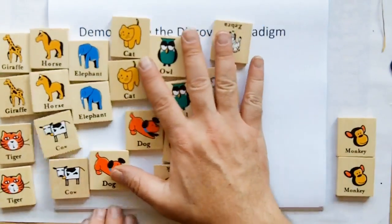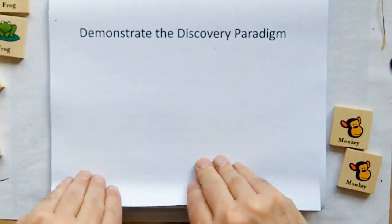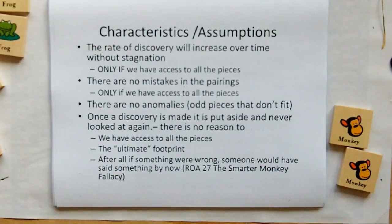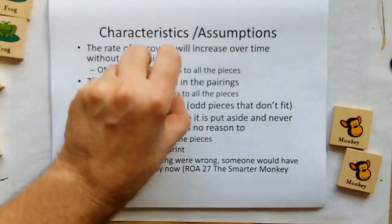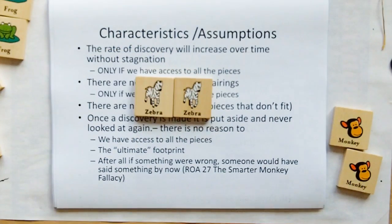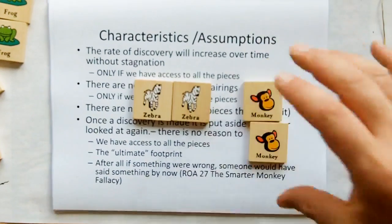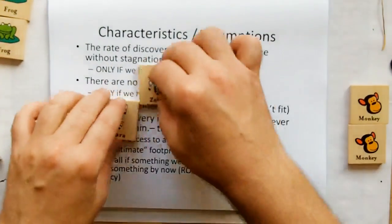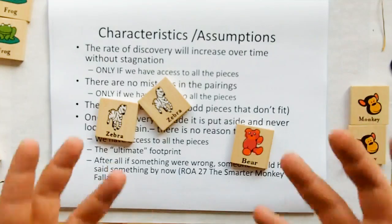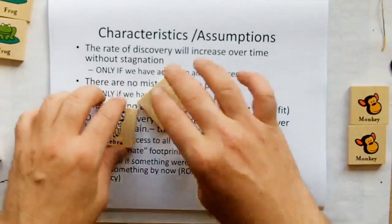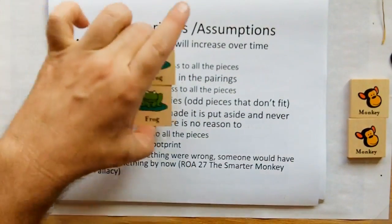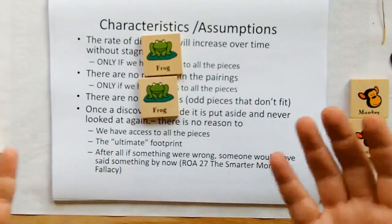What we learned from this demonstration is that the rate of discovery will increase over time without stagnation if and only if we have access to all the pieces. There are no mistakes in the pairings — everything pairs off equally, no anomalies, no pieces that don't fit, because we have access to all the pieces. Once a discovery is made it's put aside and never looked at again — there's no reason to.